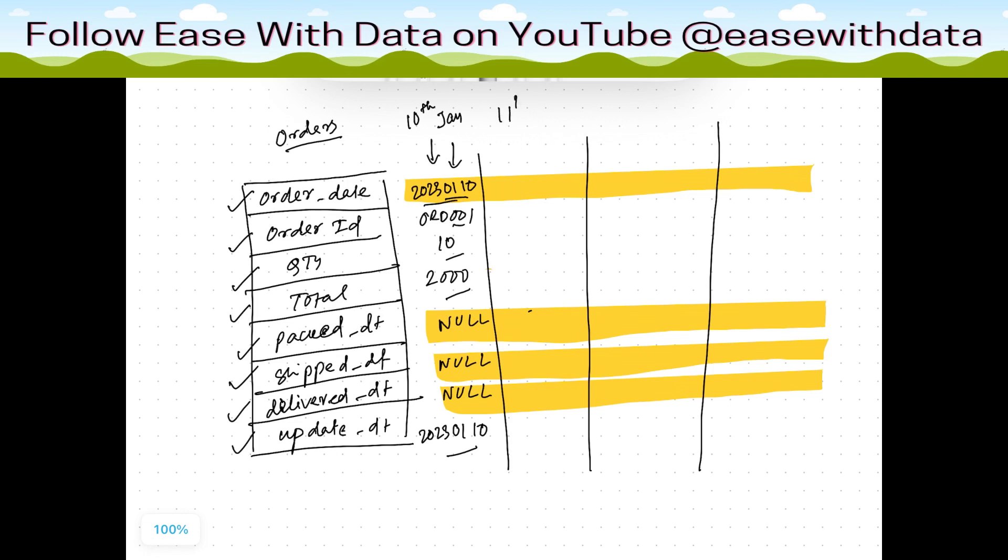Now on 11th Jan, the order is packed. So we will have another record. These three information will remain same. Here we will have 2023-01-11 and these two will still remain null.